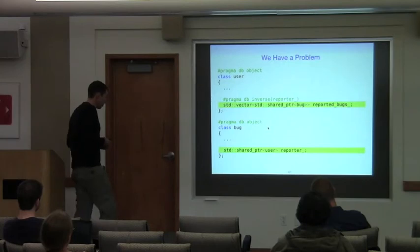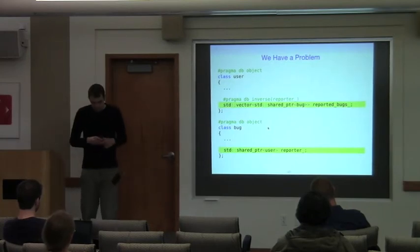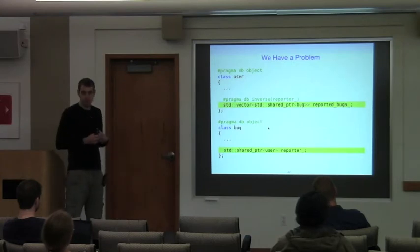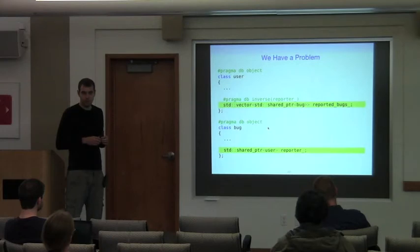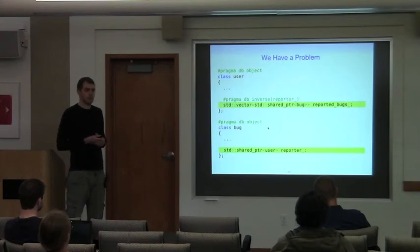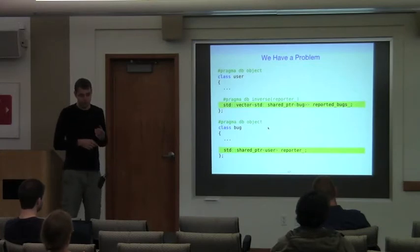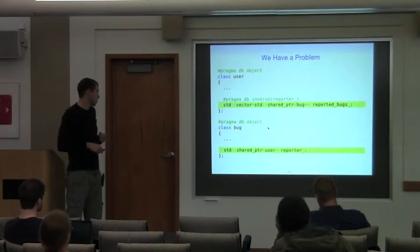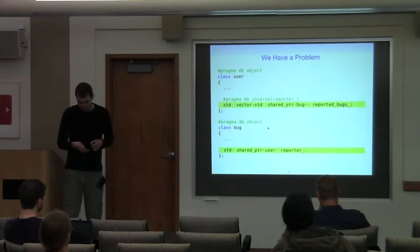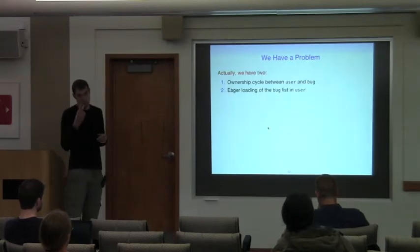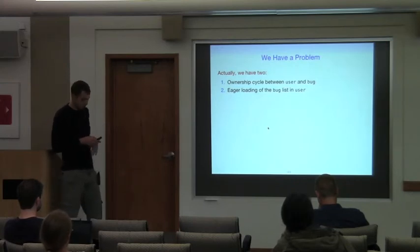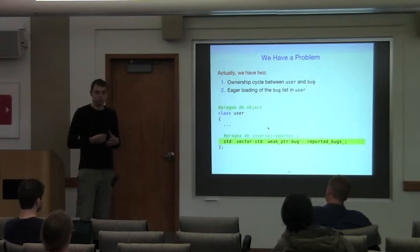Here's the final version of our bidirectional relationship. We actually have two problems. First is an ownership cycle — a user class which owns a bug class and a bug class that owns a user class — which is fairly easy to fix with weak pointers to the rescue. The second problem is a bit more interesting.